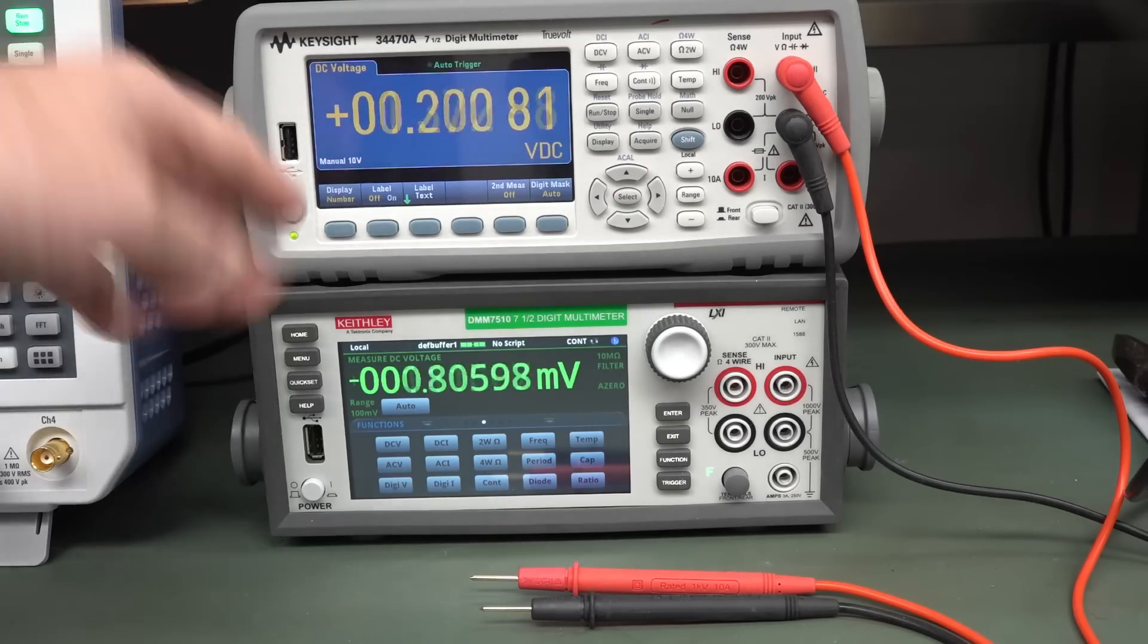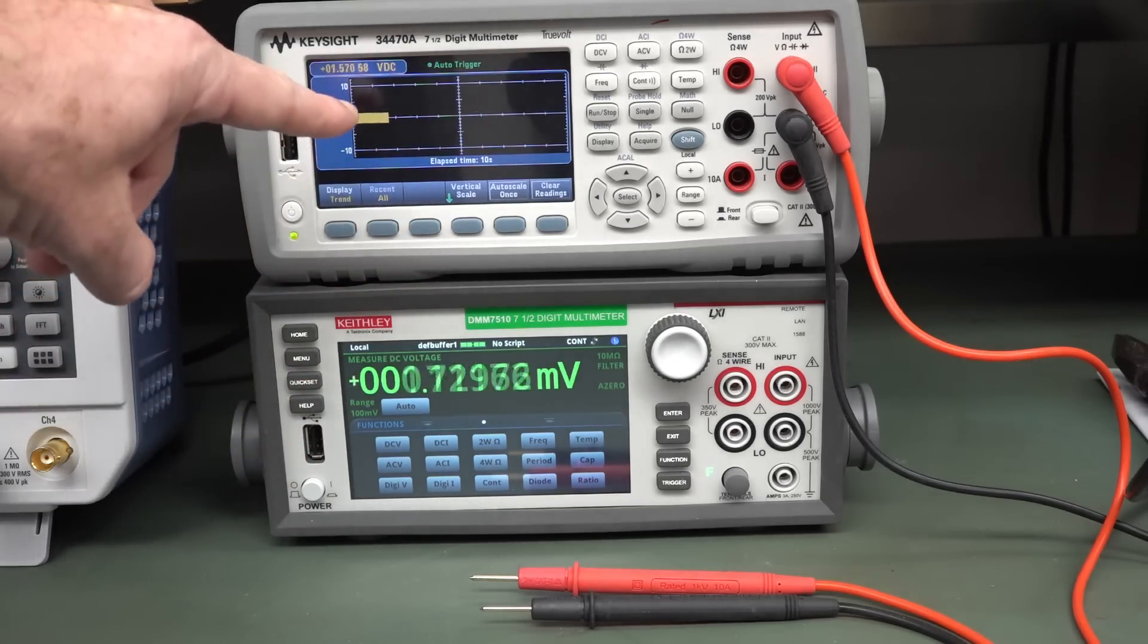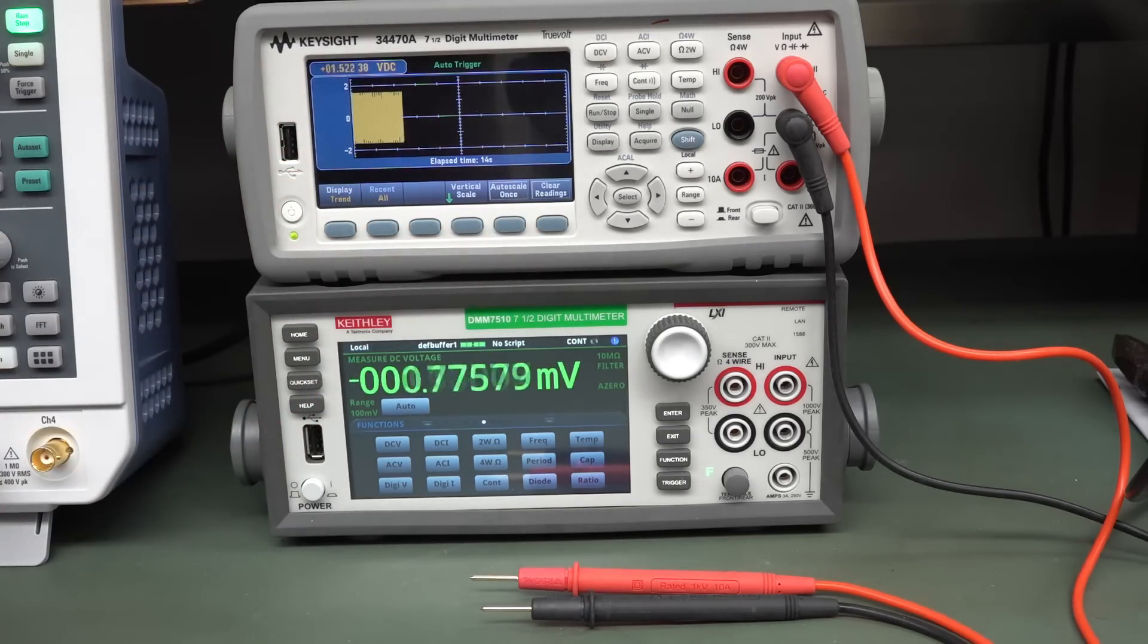And this is actually very real stuff. Look, if we go into the trend chart over here, we can see, look at that. I mean, we can auto scale that. Look at that. I mean, there's real stuff on there at almost two volts, plus minus two volts peak to peak. It's enormous.